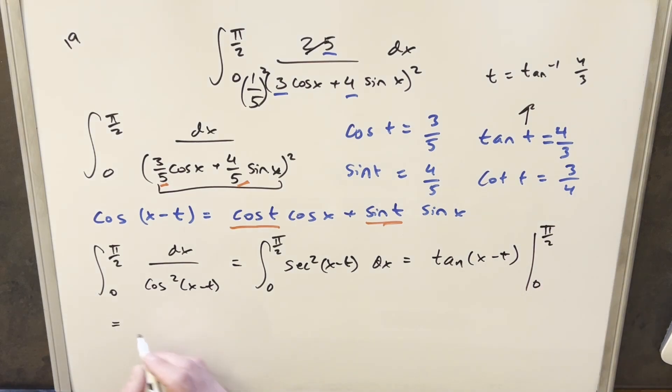So we'll just come down here and evaluate this thing. So plugging in pi over 2, we have tan pi over 2 minus t. And then for the second term, we plug in 0, we end up with tan of minus t.